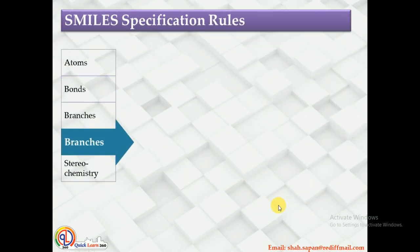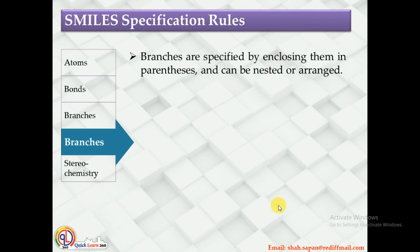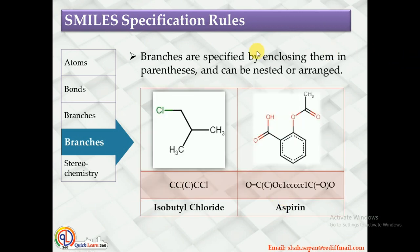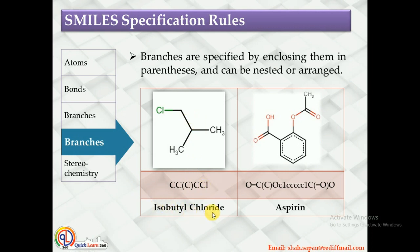Now, to represent branches, the specification rule says that branches are specified by enclosing them in parentheses. Let us see the example of isobutyl chloride. You can see the methyl group is a branch on the C-C-C-Cl chain. It is represented as CC(C)CCl, where the branching methyl group is placed in parentheses.